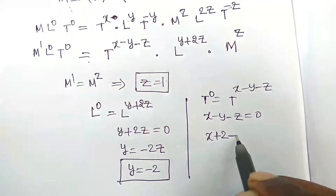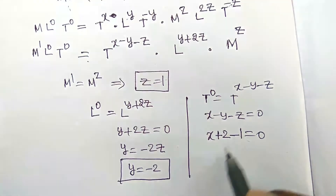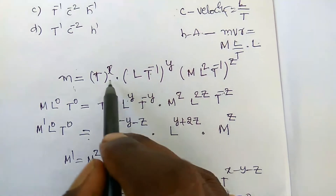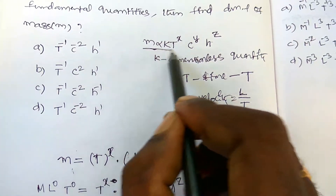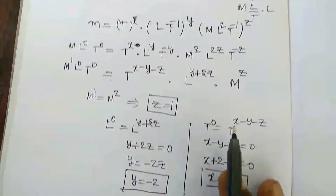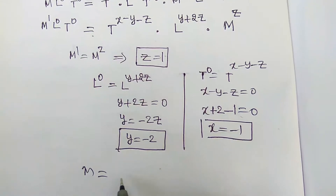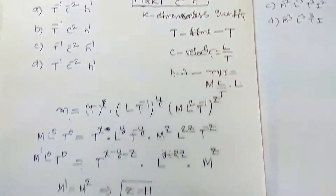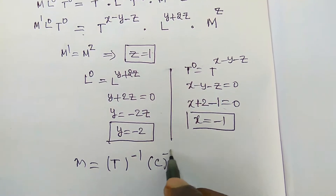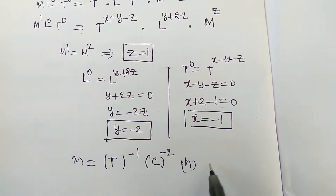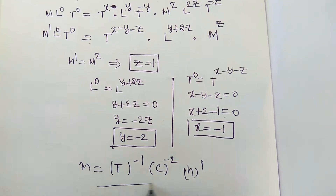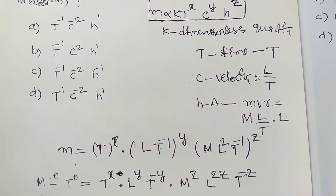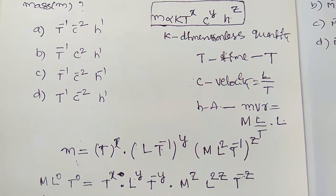Comparing M: M¹ = M^z, so z = 1. Comparing L: L⁰ = L^(y+2z), so y + 2z = 0, giving y = −2z = −2. Comparing T: T⁰ = T^(x−y−z), so x − y − z = 0. Substituting y = −2 and z = 1: x + 2 − 1 = 0, so x = −1.